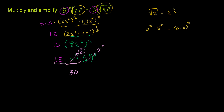So that gives us 30x squared, and you are done. There are a bunch of ways you could do this — you might not decide to use exponent notation. You could say, since these are cube roots, you can take the cube root of the product of both of them, and depending on how you group things you could do this in different orders. As long as you apply the exponent properties correctly, you should get to this same answer.